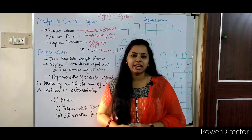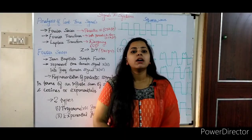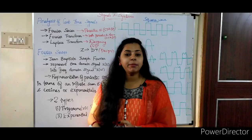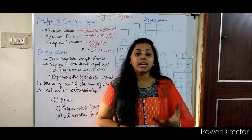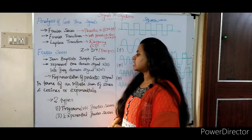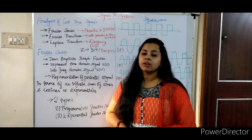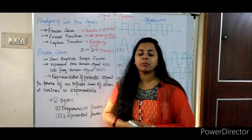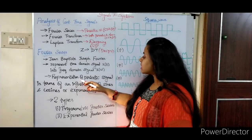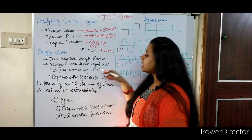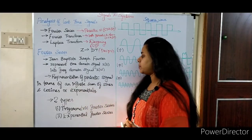The Fourier series can analyze a periodic signal. We have to analyze a signal in the time domain and represent it in the frequency domain — it is very easy to analyze it that way. So in the Fourier series, what we do is take the time domain signal and represent it in the frequency domain. It is a representation of a periodic signal in terms of an infinite sum of sines and cosines, or exponentials.